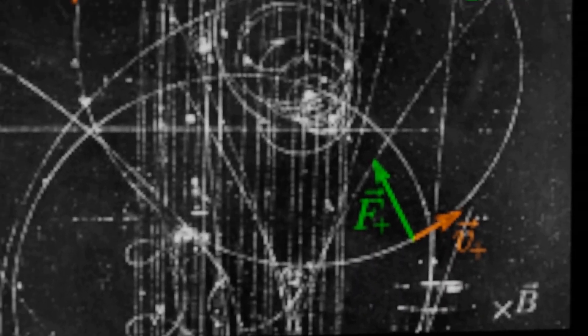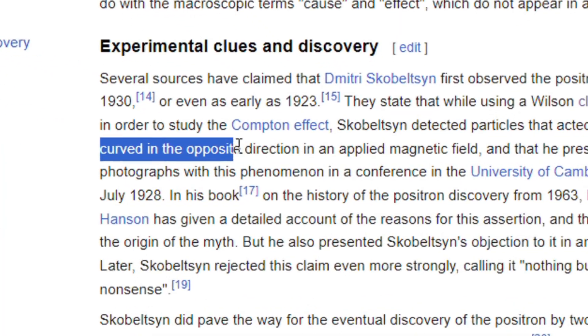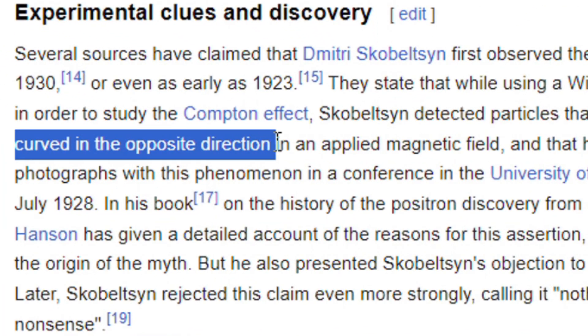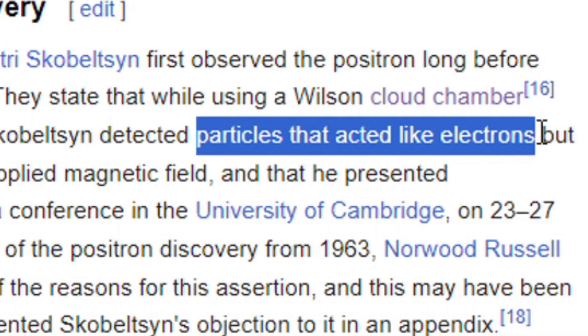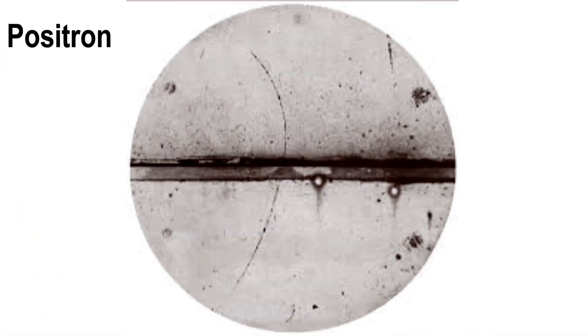Because of this setup, the discovery of positron was possible as two particle physicists observed that a particle is curving in the direction of alpha particle but the radius of curvature is like beta particle. This confirmed that this particle has mass near to electron but opposite charge.